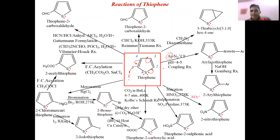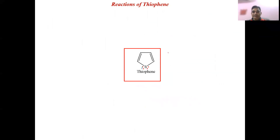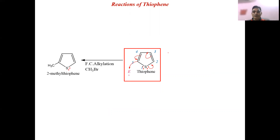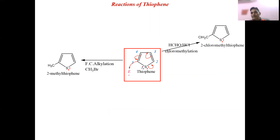Next, to introduce the CH2Cl group: the electrophile CH2Cl attacks at C5 position, and the product 2-chloromethylthiophene is prepared. The mechanism is simple — attack at C5 by the CH2Cl electrophile.